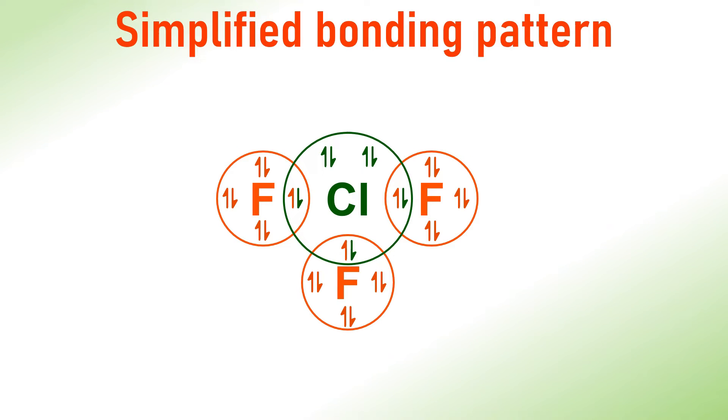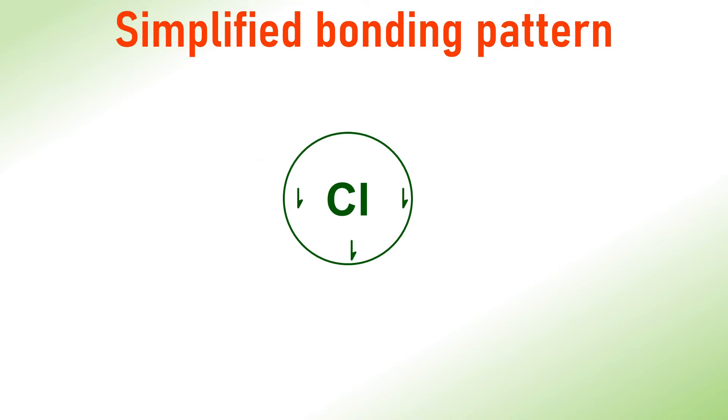Before delving into hybridization, let us analyze the structure of ClF3 using the Lewis model. In this molecule, the central atom is Chlorine. It contributes three unpaired electrons for bond formation, while each Fluorine atom contributes one electron resulting in three bonds formed by the Chlorine atom.